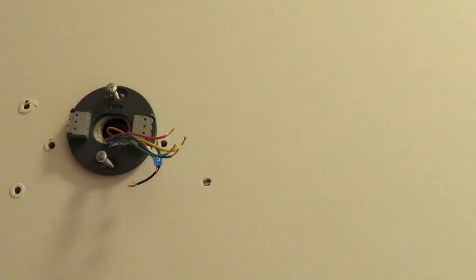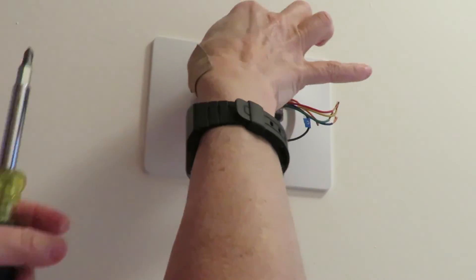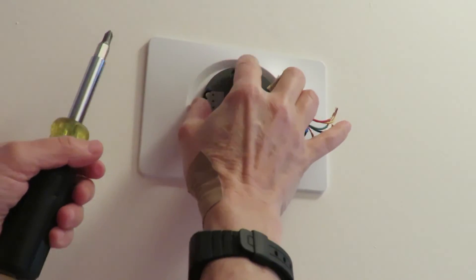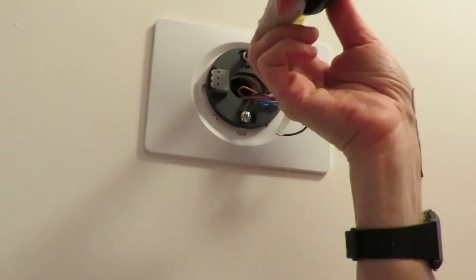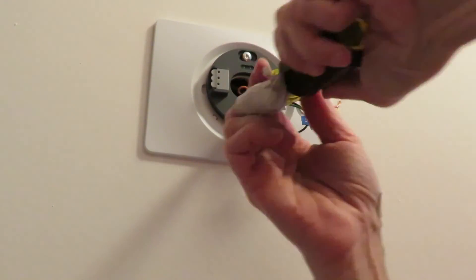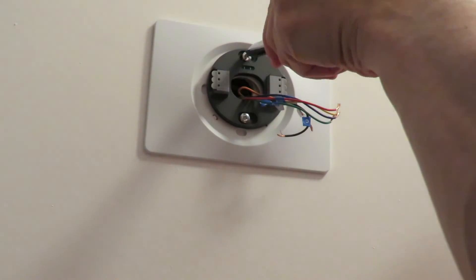Uh-oh, the nest will not cover up all the holes from the previous thermostat. Lucky for us, we have a plate that will fit behind the nest and also cover up the holes. After we check the bubble level, we can fully screw it in before we connect the wires to the nest pins.